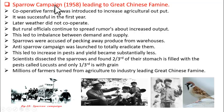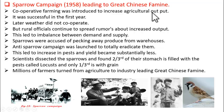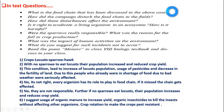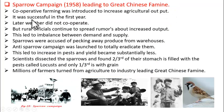This group farming was successful in the first year and resulted in double agricultural output. In the next year, due to bad weather, the output again got decreased.